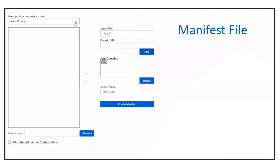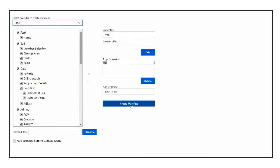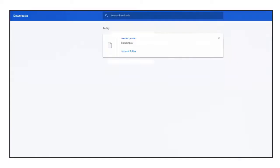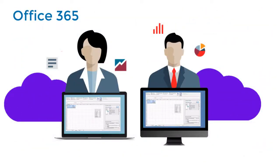Administrators can customize the manifest file to provide only the functionality your business needs. And as a cloud-based application, Smart View is frequently updated and easy to maintain. Office 365 users can connect to EPM Cloud Platform data sources from Excel 365 on a Mac or Excel 365 Online in a browser on a Mac or Windows. The first release supports these EPM cloud business processes.